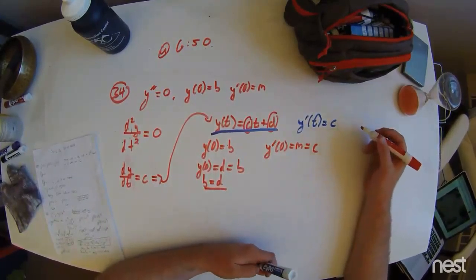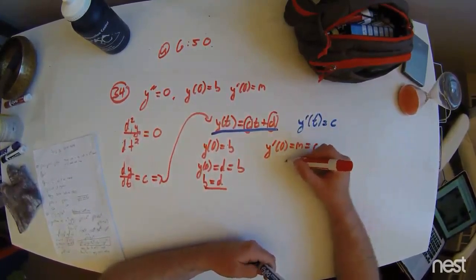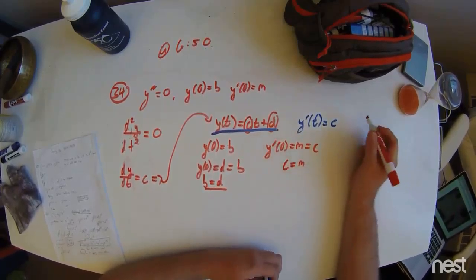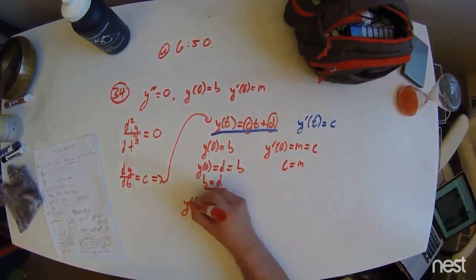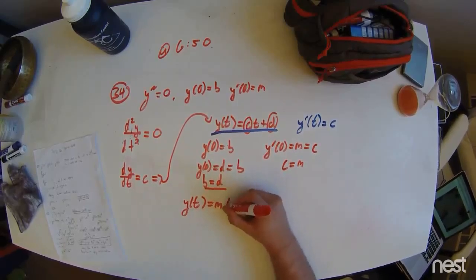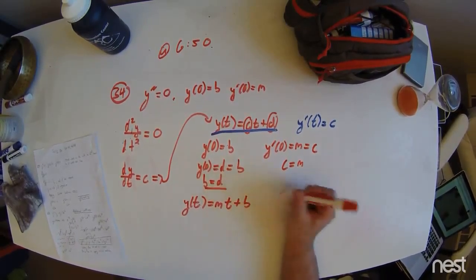Now, solving for c, we simply get c equals m. So, the full expression for y of t is mt plus b.